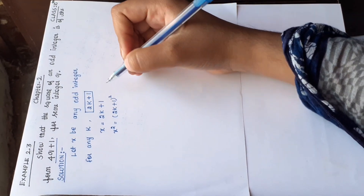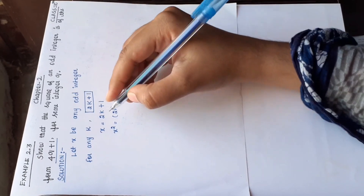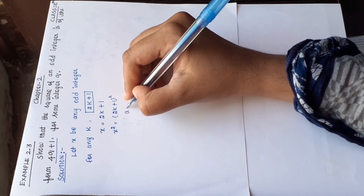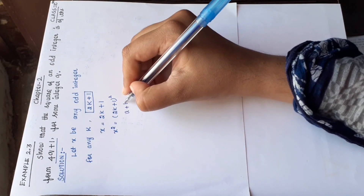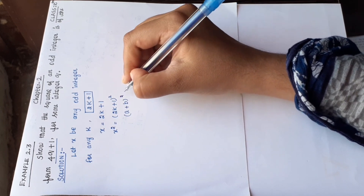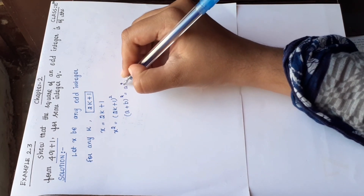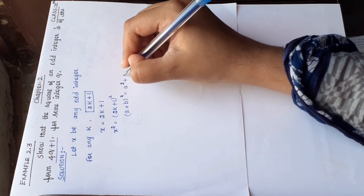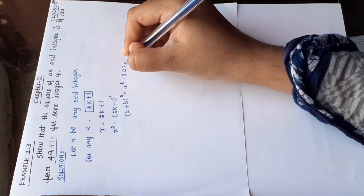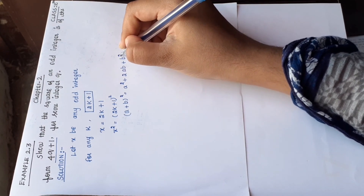இதை square பண்ணும் போது formula படி expand பண்ணப் போறோம். (a plus b) the whole square formula என்ன தெரியோ? a square plus 2ab plus b square.